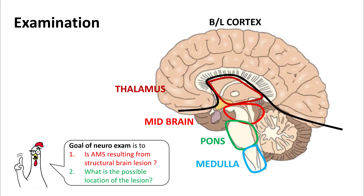The role of the neuro exam in altered mental status is to figure out if the mental status change is resulting from any structural brain lesion, and if so, what is the possible location of the lesion. A small lesion in the thalamus, midbrain, pons, or medulla can result in altered mental status, while you need bilateral cortical dysfunction to be altered. So when you are examining the patient, try to think about where the lesion might be.